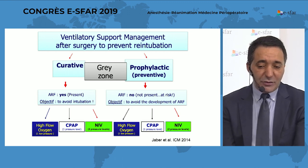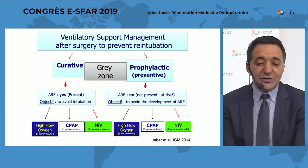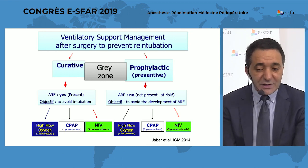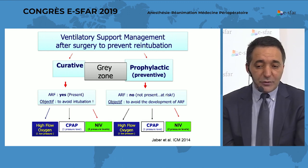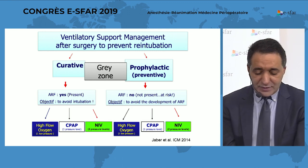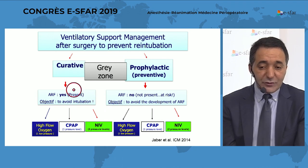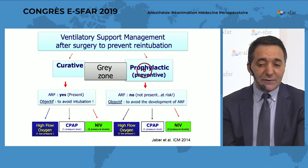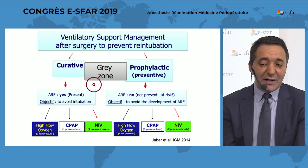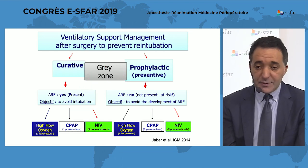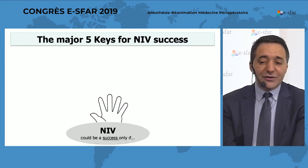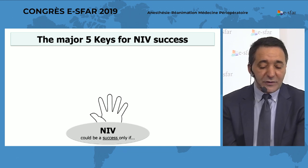One pressure is the passive one — the PIP or CPAP — and the other is often used in pressure mode, which is pressure support ventilation. As you see on this slide, you could use it for both the curative and the prophylactic situations. Or in real life, you often have a gray zone where it is not clear-cut whether the patient is in a curative or prophylactic situation. Then the major five keys for NIV success.